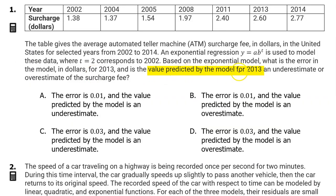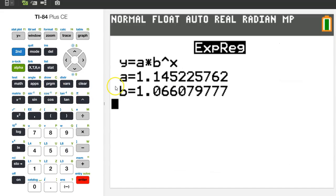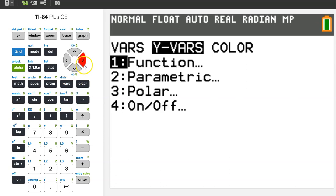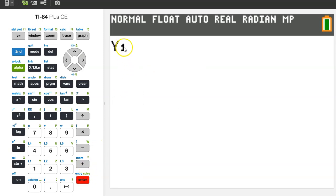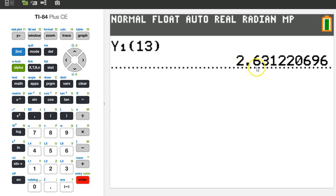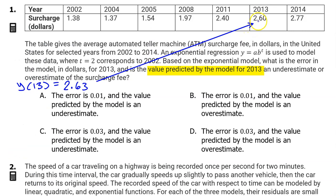This problem is all about the value predicted by the model for 2013. So that will be Y at 13. Since we stored the regression model into the calculator, we can evaluate the regression model at 13 using YVARS. So hit VARS, YVARS, ENTER, and ENTER for Y1. To evaluate the model at 2013, we can just put a 13 in parentheses like this. So this is the surcharge predicted by the model for the year 2013. The actual surcharge in 2013 is $2.60, so our model is overestimating by 3 cents. So the answer is D.